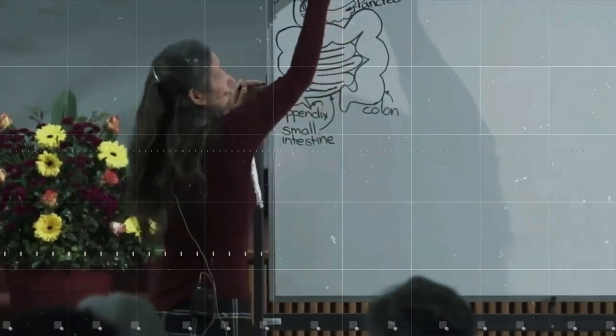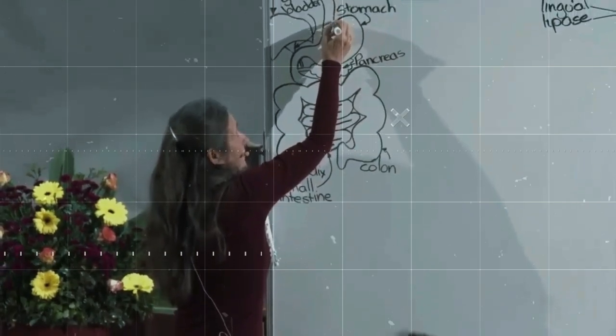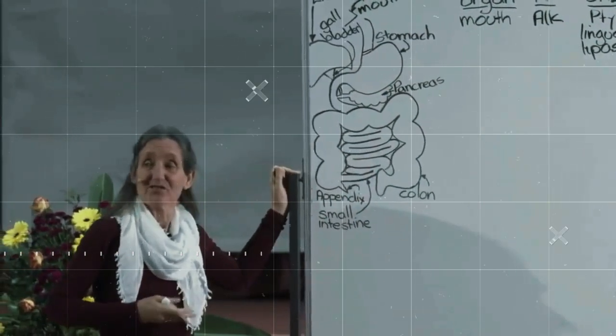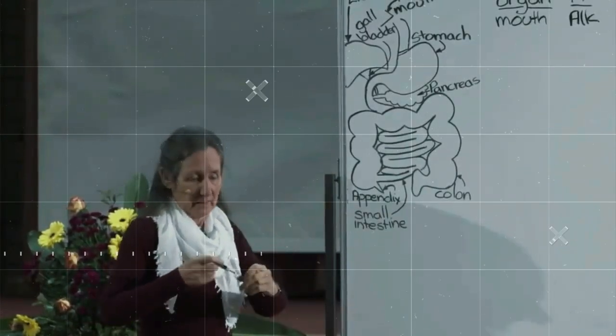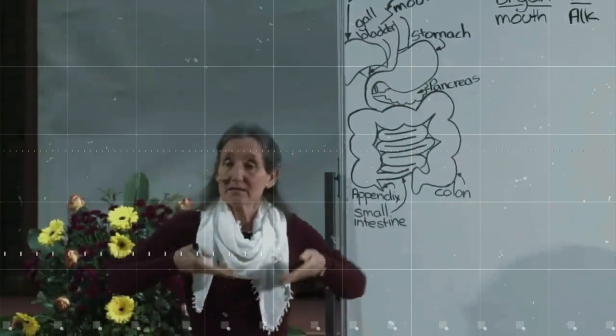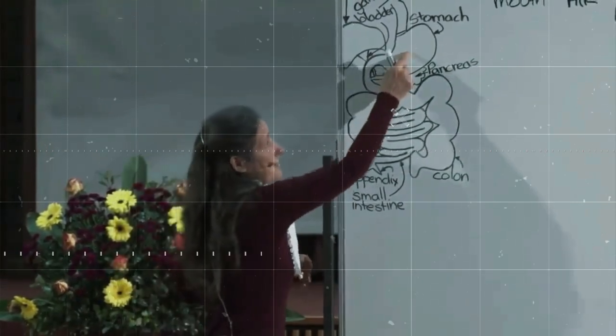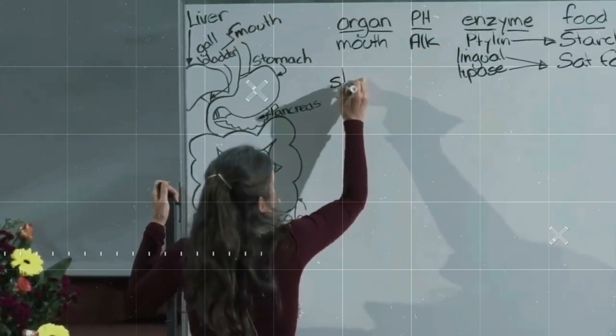Coming down the esophagus, there's a gateway in the stomach. It's a double-layered gateway called the cardiac sphincter. The cardiac sphincter opens when the muscles tighten to let the food through. And then as we get into the stomach, we get another stage of digestion.